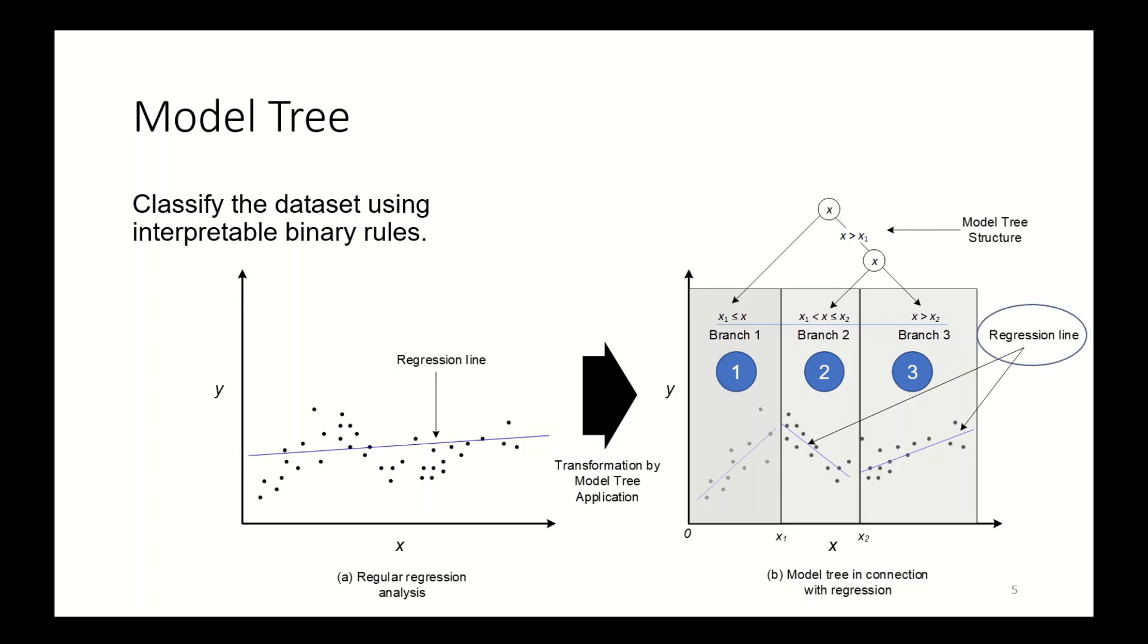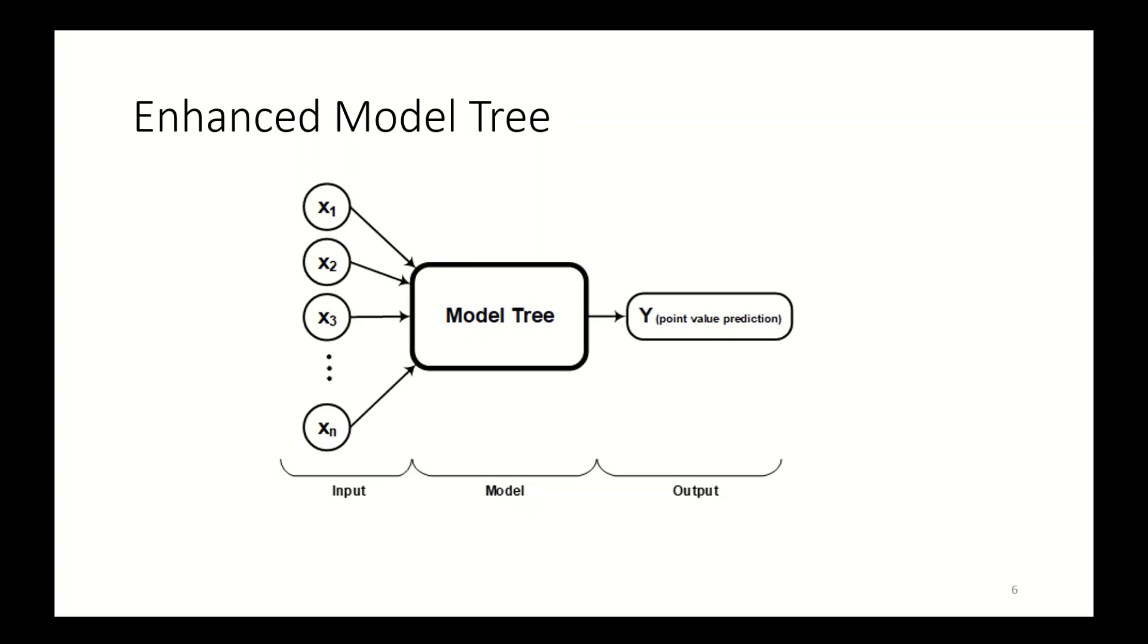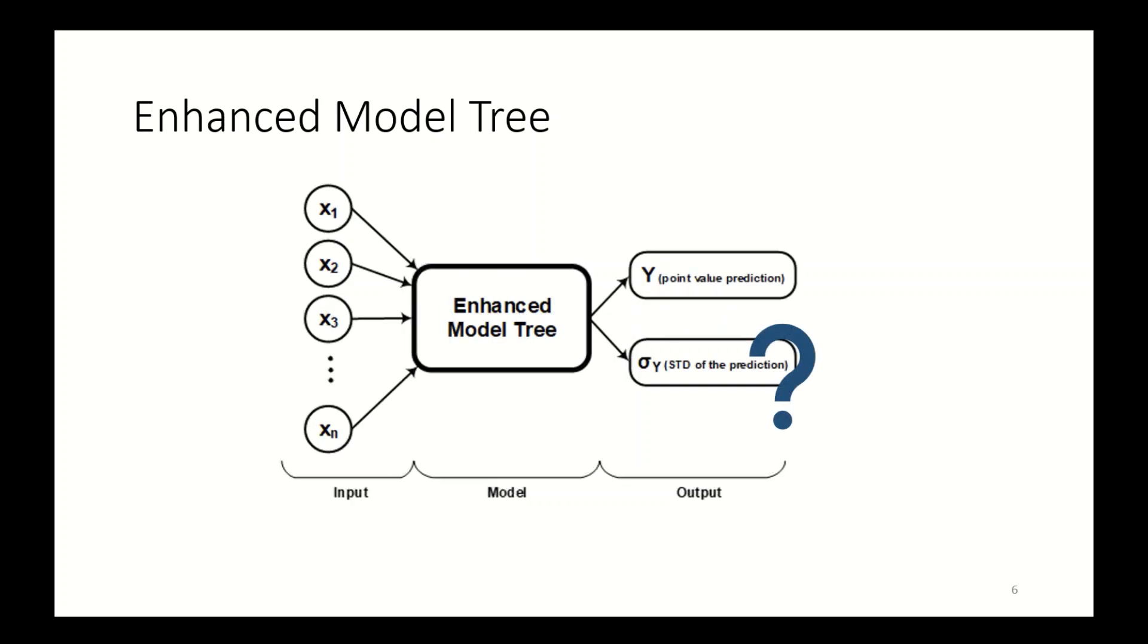Now the input-output relationship for data confined in each subset of three can be explained by linear regression equations. So model tree can explain non-linear input-output relationship. However, variance estimate associated with the predicted output is still missing. The enhanced version of the model tree should provide both of them.